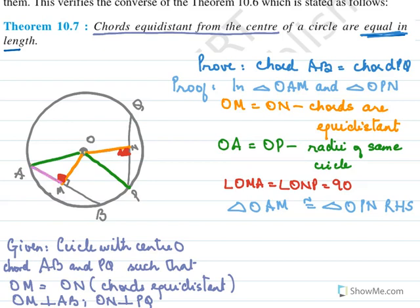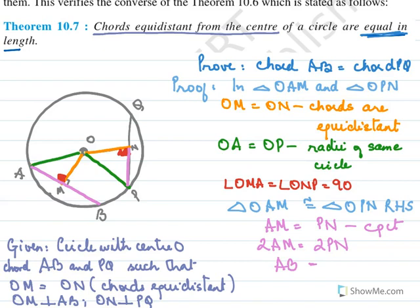So AM equals PN by CPCT. Therefore twice AM equals twice PN. But AM plus MB is AB, and since N is the midpoint, twice PN is PQ. So we have proved AB equals PQ — equidistant chords are equal.